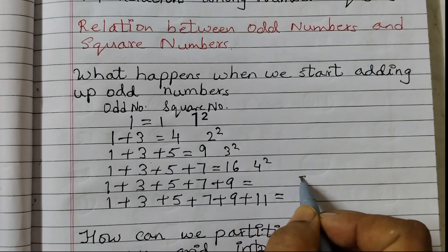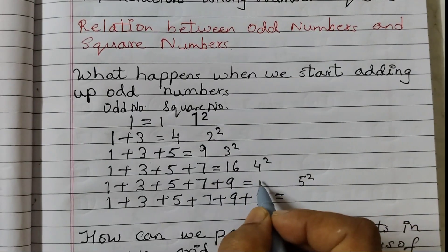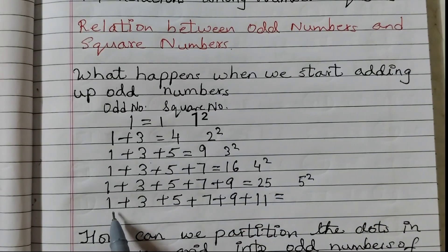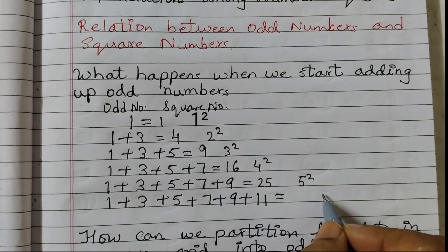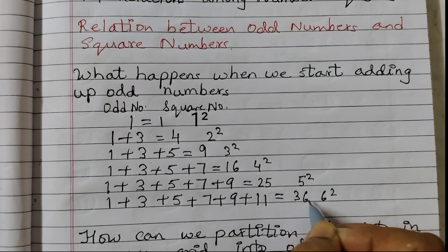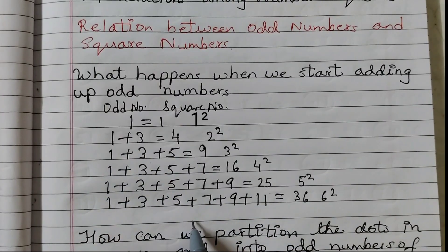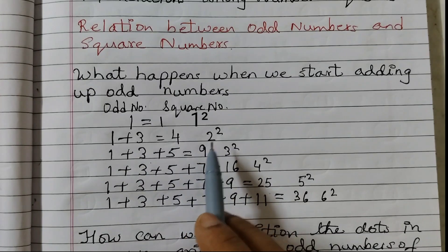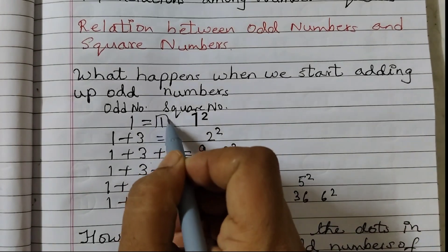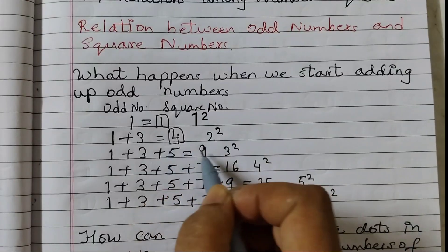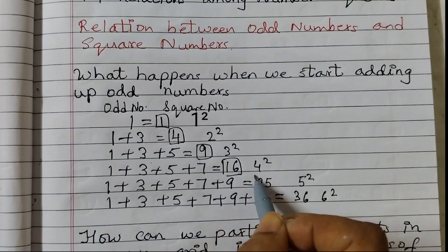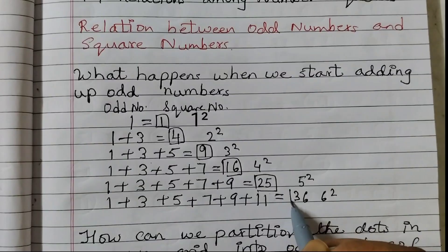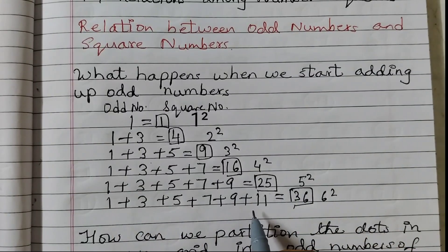5 odd numbers — that means the answer would be 5 squared which is 25. Then 6 odd numbers, so the answer would be 36. So this is a pattern which is being followed. The relationship you can see: by adding the odd numbers we are getting the square numbers — first we got 1, then 4, then 9, 16, 25, 36. Just count the odd numbers and square it and you will get the answer.